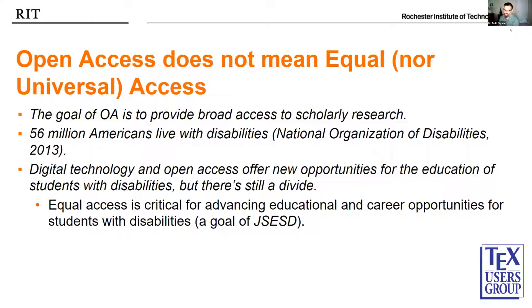My data is a bit older and needs updating, but at least here in the United States we have 56 million citizens living with disabilities. Participating in the workforce, education system, and entertainment venues can be difficult. We do have laws like the Americans with Disabilities Act that provide greater access to buildings and public spaces. Web standards and assistive technologies have provided increased access, however a fully accessible digital environment is far from complete. Digital technology and open access offer new opportunities for education of students with disabilities, but there's still a divide — equal access is critical for advancing education and career opportunities.